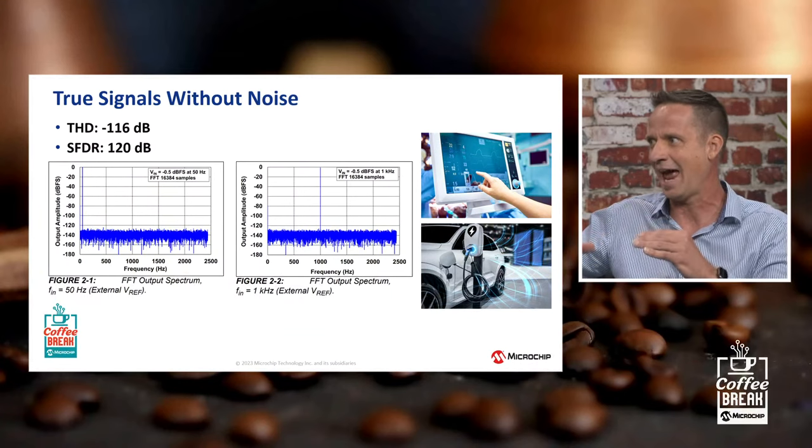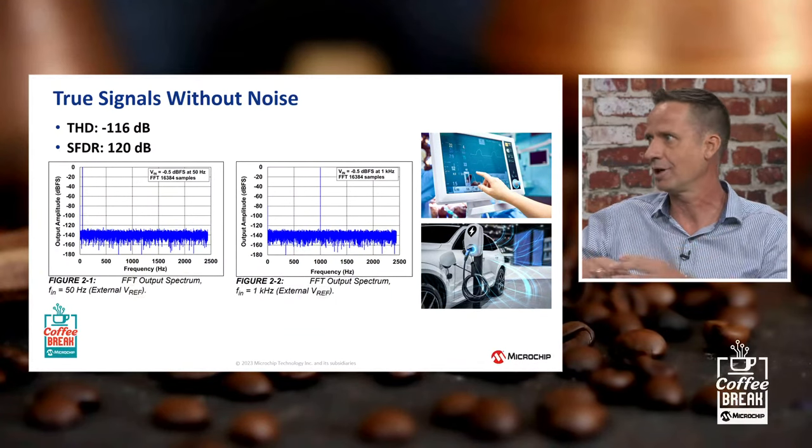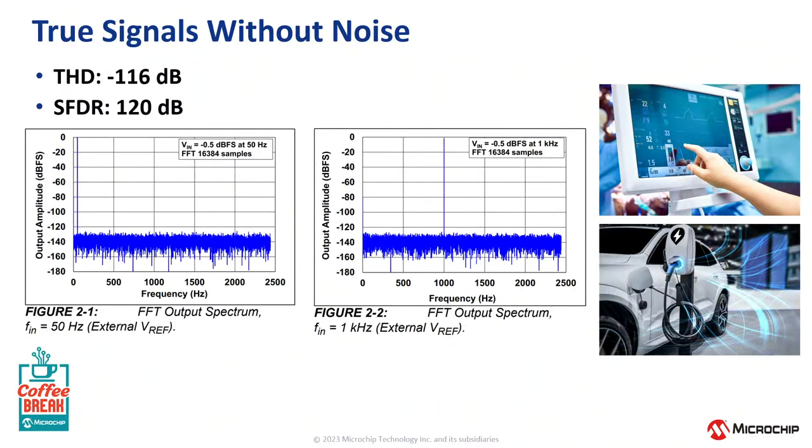You used the phrase 'high fidelity' — what does that really mean in this type of application? It really comes down to wanting true signals. When you're measuring a signal, you're taking it from the analog domain into the digital domain, and you want to make sure you're getting that true signal. First, we look at distortion and noise. We want the distortion on the signal we're acquiring to be as low as possible. Our delta sigma modulators have awesome THD — total harmonic distortion — of minus 116 dB below the main signal, which is more than almost 100,000 times less.